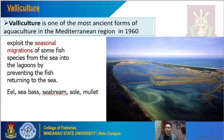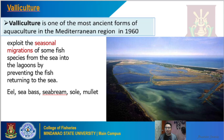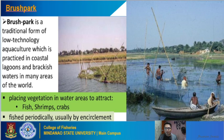Another is the brush park — a very traditional way of cultivating fish. The brush park is a traditional form of low-technology aquaculture practiced in coastal lagoons and brackish water in many areas of the world. It is done by placing vegetation in the water to attract fish, shrimps, crabs, and other aquatic animals, which are then harvested periodically, usually by encirclement. The photo shows people in Thailand using vegetation to attract and gather fish species.